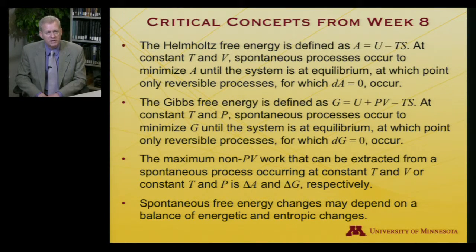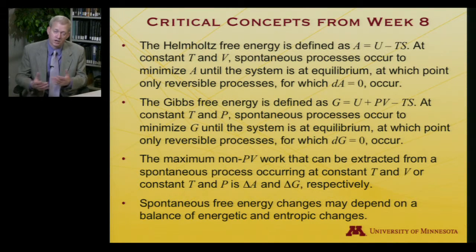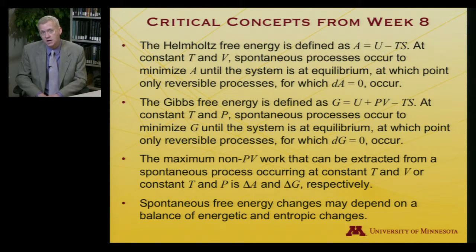The maximum non-PV work that can be extracted from a spontaneous process occurring at constant temperature and volume, or constant temperature and pressure, is delta A or delta G, respectively, depending on which of those two conditions holds. It's either isothermal isochoric — isochoric is how you say constant volume — so constant T, constant V is isothermal isochoric, or isothermal isobaric, that is constant temperature and constant pressure. Those correspond to Helmholtz and Gibbs free energies, respectively.